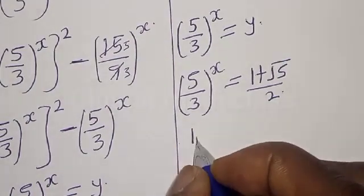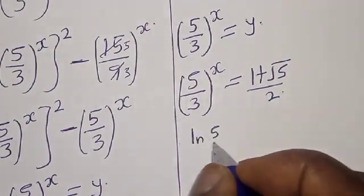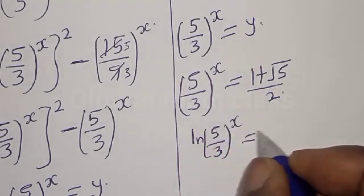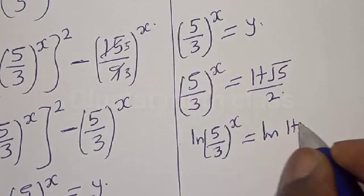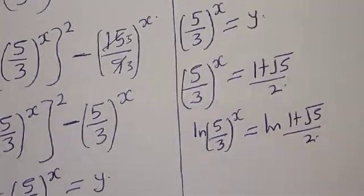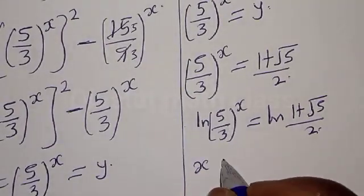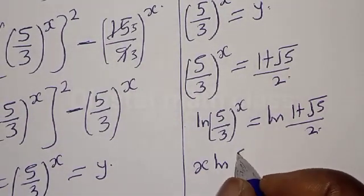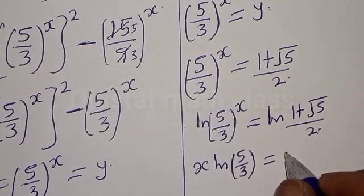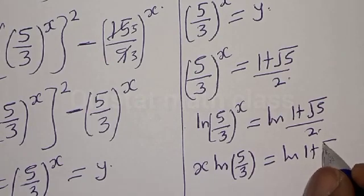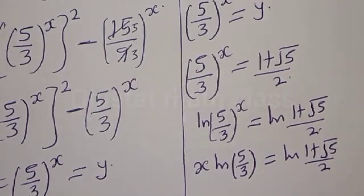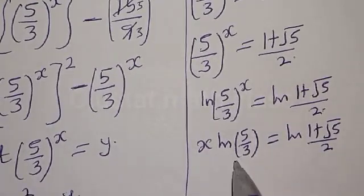Now let's take the natural log of both sides. We have natural log of 5 divided by 3, raised to power s, is equal to natural log of 1 plus square root of 5 divided by 2. Then we have s times natural log of 5 divided by 3 is equal to natural log of 1 plus square root of 5 divided by 2.